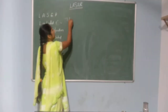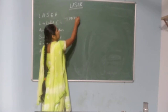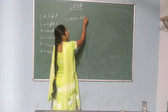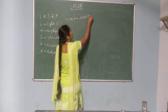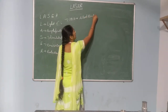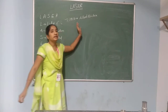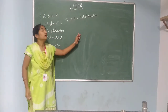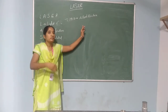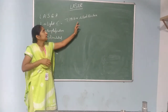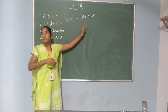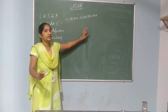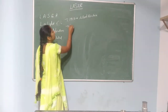In 1917, Albert Einstein theoretically proposed that stimulated emission must exist, providing the theoretical foundation about stimulated emission.